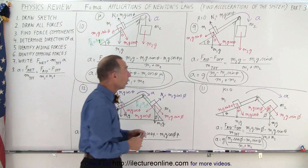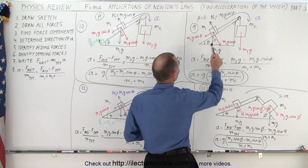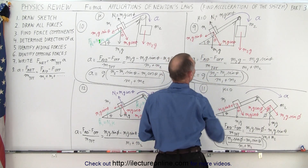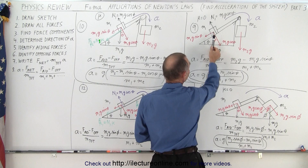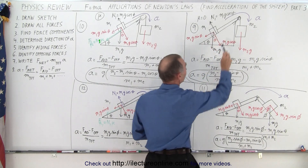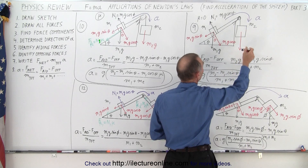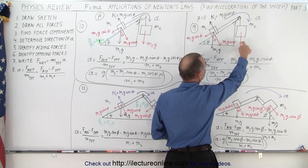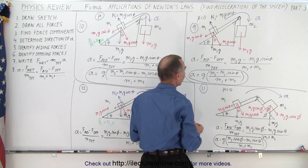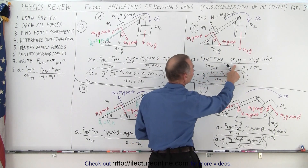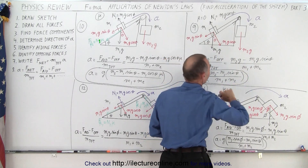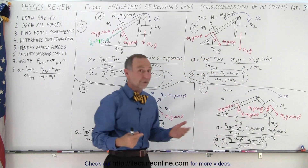On our first example, there's no friction between block M1 and the surface. You still have the weight Mg divided into its parallel and perpendicular components. You determine the acceleration direction, then realize one force is the aiding force and one is the opposing force. Therefore the acceleration equals the aiding force M2g minus the opposing force M1g sin theta, divided by the total mass of the system.